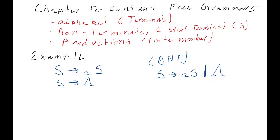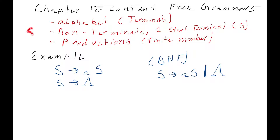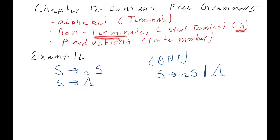Context-free grammars contain an alphabet, just like regular expressions and finite automatas. Usually we'll use A and B for that alphabet. They also include a set of non-terminals. In this class, we're going to use capital letters like a capital N or a capital S, whereas the alphabet letters will be lowercase. The non-terminals have one start symbol, and we're pretty much always going to use S for this class, but we can designate some non-terminal as our start symbol.